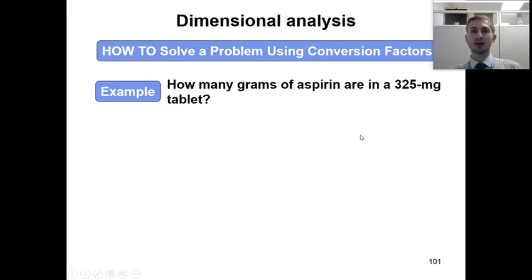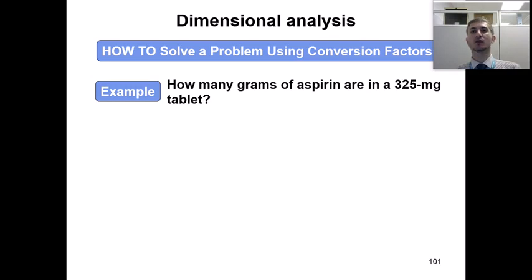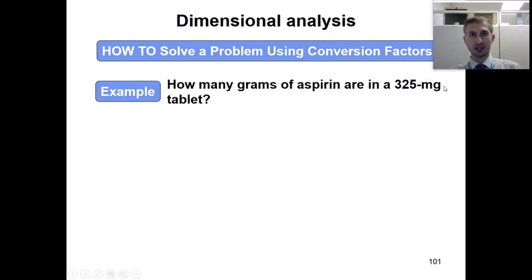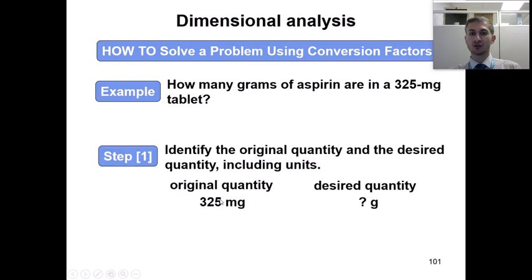How many grams of one type of medication — like aspirin — are in a 325 milligram tablet? Here we have 'milli' as one of the prefixes that I asked you at the beginning of our class to memorize. You are not given this for your exam, quizzes, or homework assignments — you should know the meaning of milli. We have 325 milligrams as our original number and unit, so we should start with them. Our new unit that we are converting to is grams. So we are going to convert 325 milligrams to grams.